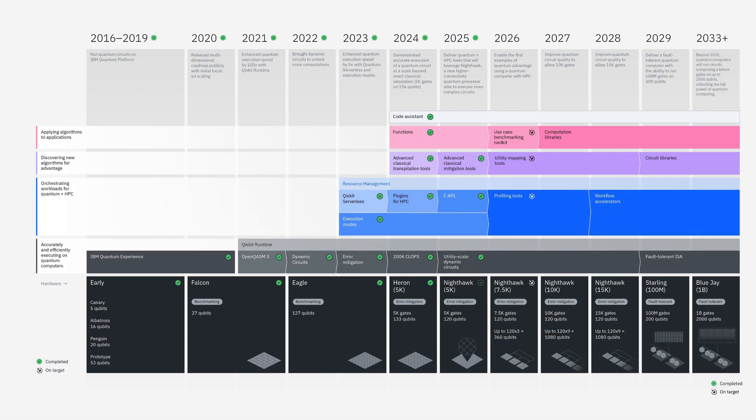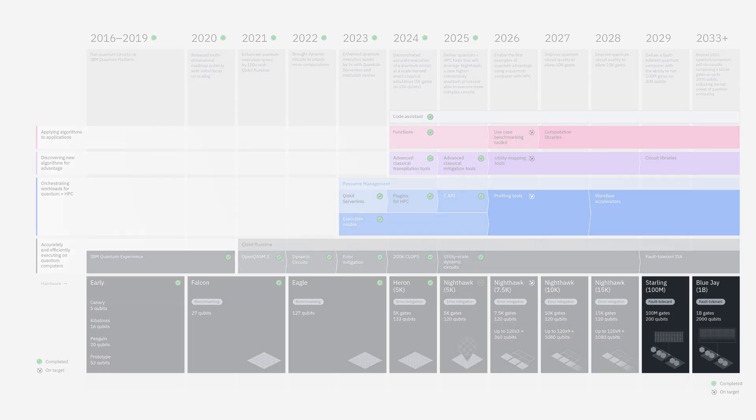The IBM Quantum Roadmap is a transparent plan showing steady milestones from now through the 2030s, including new processors and technologies designed to scale fault-tolerant quantum computing. The roadmap includes a large-scale, fault-tolerant quantum computer called Starling, capable of running 100 million quantum operations on 200 logical qubits. This is a foundational step toward an even more powerful system called BlueJ, capable of running 1 billion quantum operations on 1,000 logical qubits. For more on the path to fault tolerance, check out the IBM Quantum Roadmap and the links below this video.